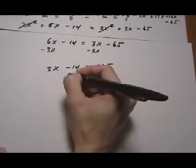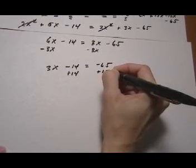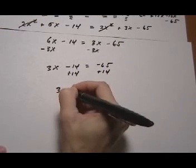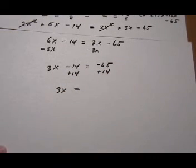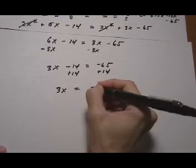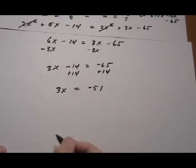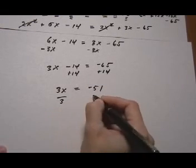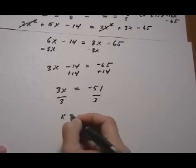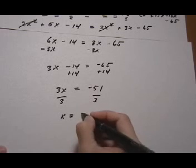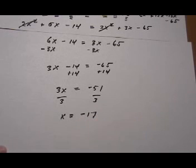Now we want to move numbers to the other direction. Add 14 both ways. 3x equals minus 51. Divide by 3 and we will have our answer. x equals minus 17.